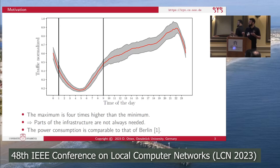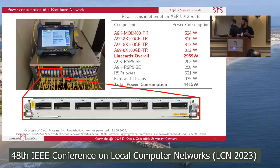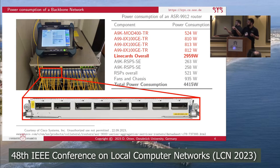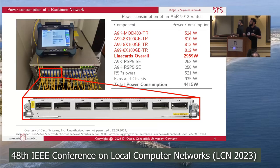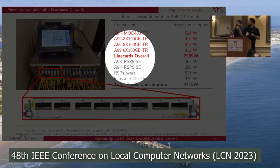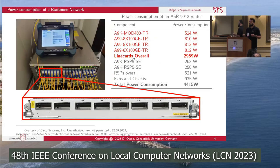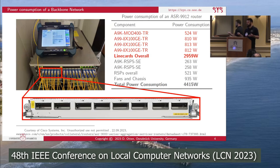How is the power consumption of the backbone network made up? It is simply the power consumption of the backbone routers. A router consists of several components, and the most important are the line cards. They provide the endpoints — the connections and so-called ports. And when we look at the power consumption breakdown, line cards consume the vast majority of power within the router.